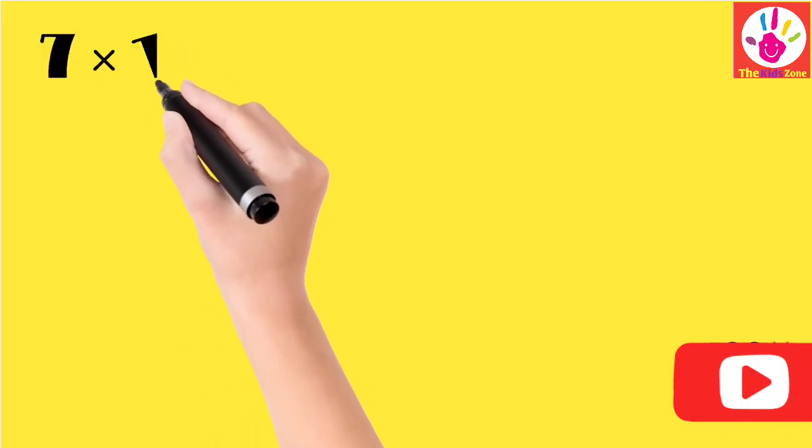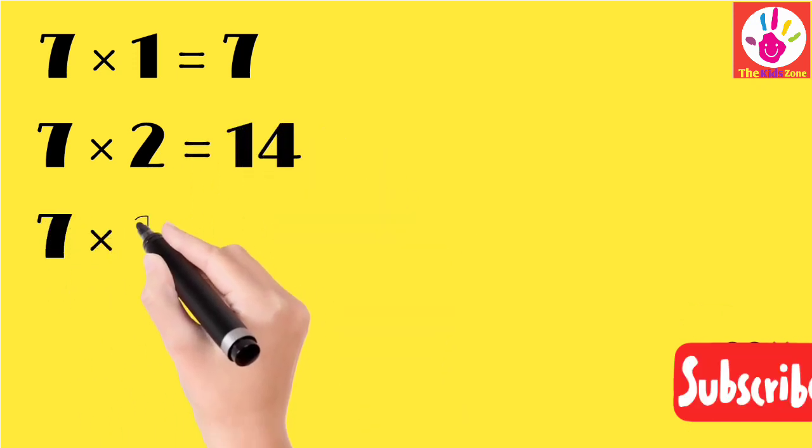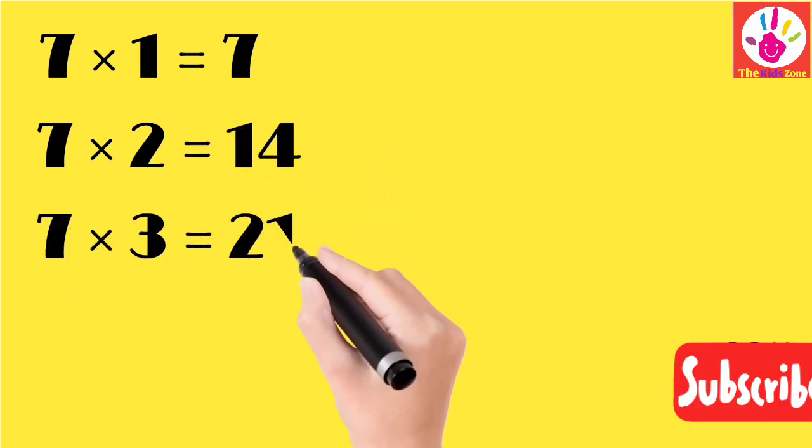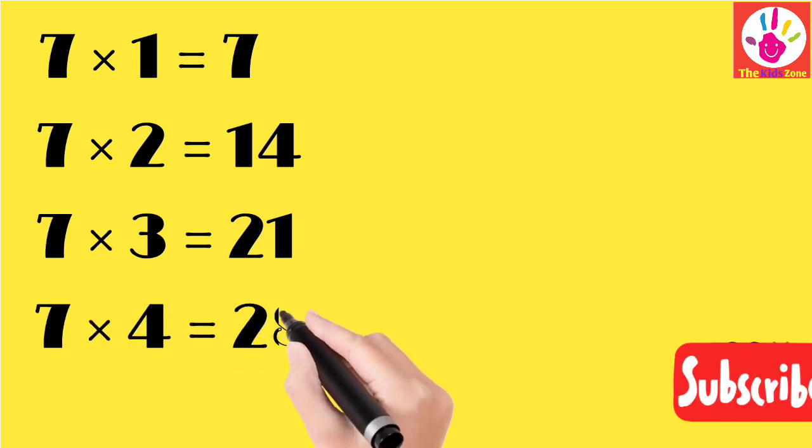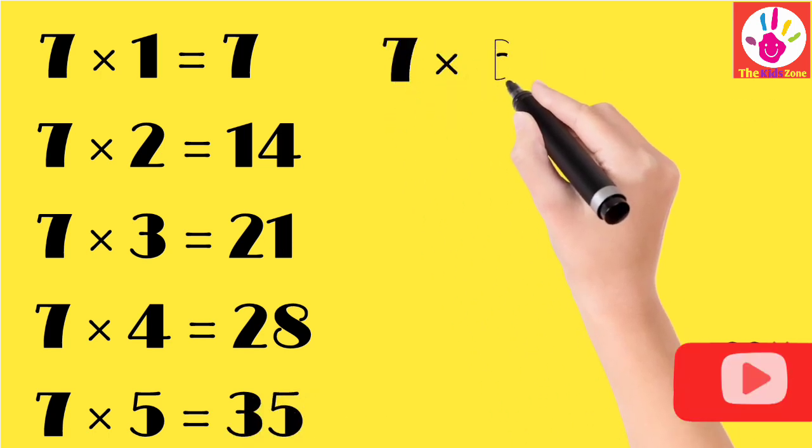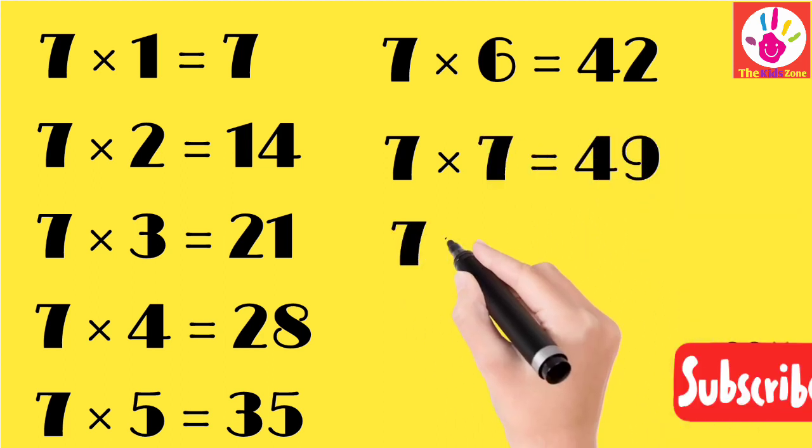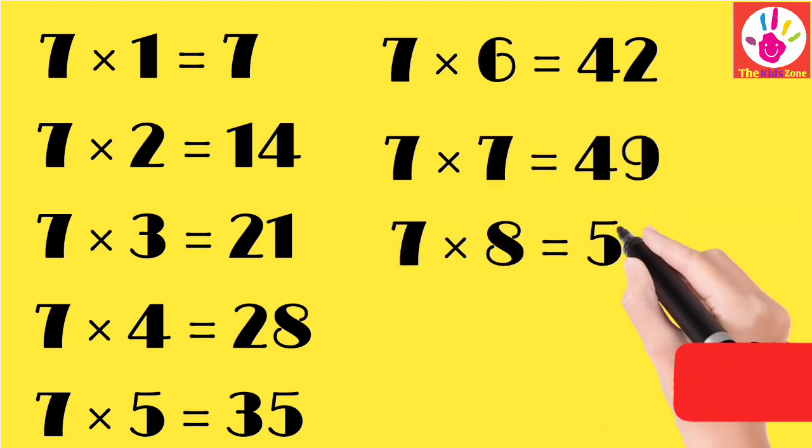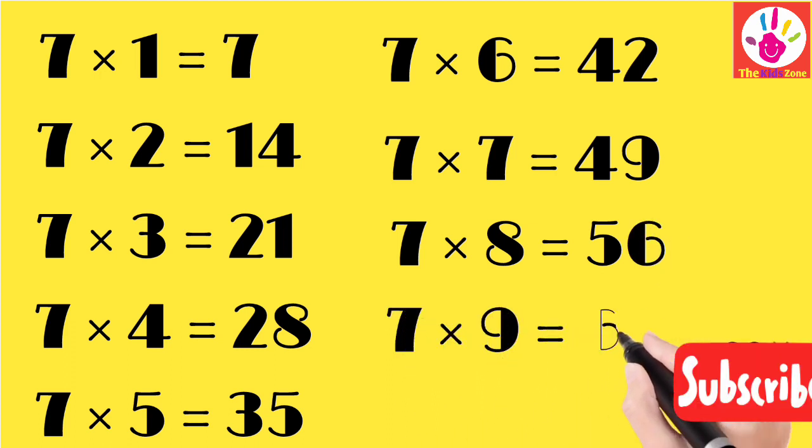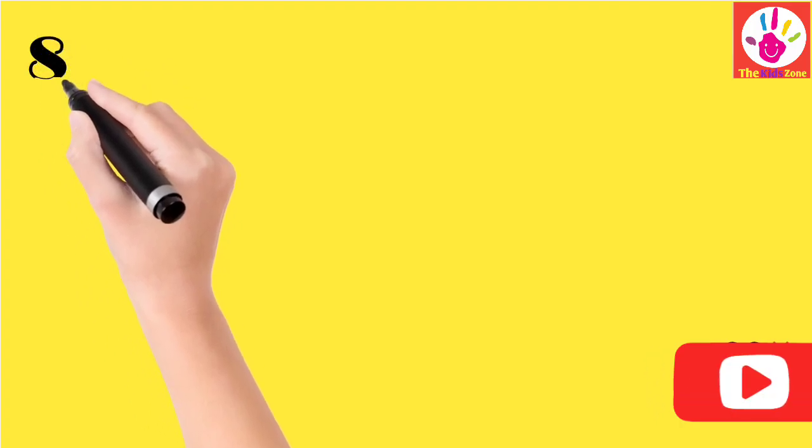Table 7: 7 ones are 7, 7 twos are 14, 7 threes are 21, 7 fours are 28, 7 fives are 35, 7 sixes are 42, 7 sevens are 49, 7 eights are 56, 7 nines are 63, and 7 tens are 70.